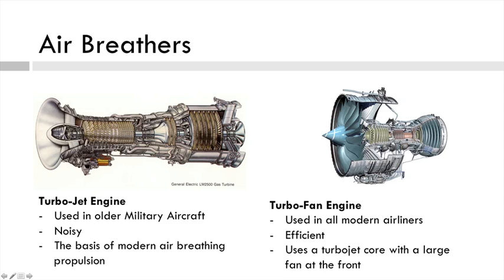The turbofan engine is based on the turbojet and is used in all modern airliners because it's a lot more efficient and less noisy. Basically, we have a core turbojet squashed in the centre, and around the outside we have a big duct and a giant fan at the front. The core engine is mostly used to run this fan, which produces some thrust, but a lot of the thrust is produced by the bypass section. These are also called bypass engines.